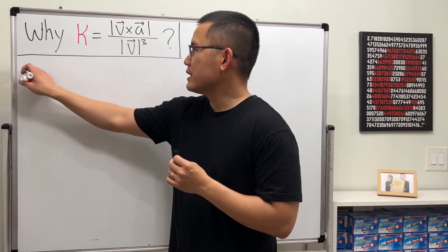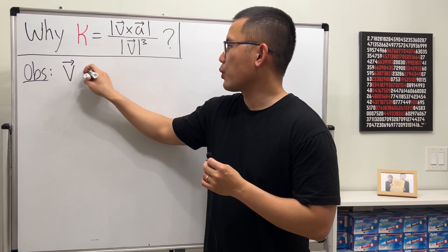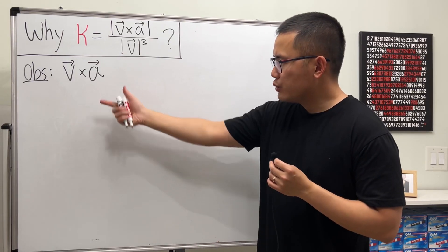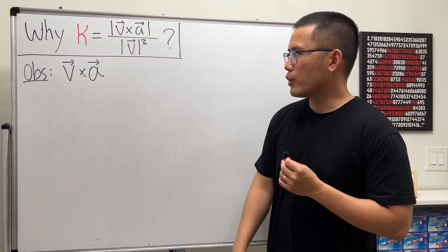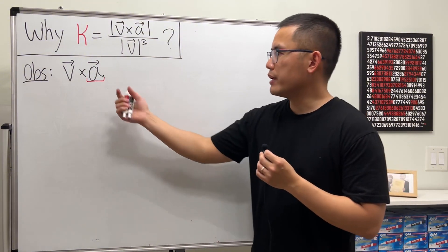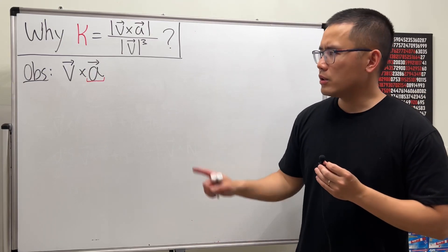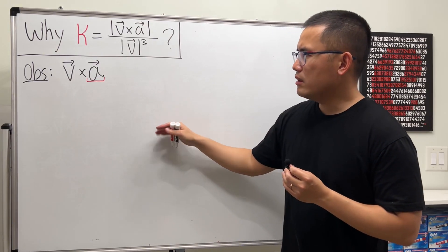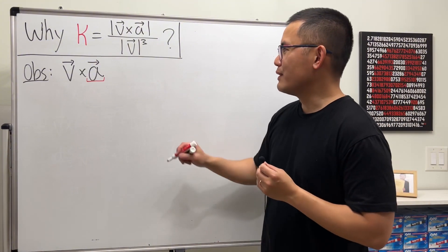Let's see why this is true. First, let's begin by making an observation from v cross a. If we just look at this, it doesn't seem like we have a lot to work with. But for a, we have done a video on how we can break down a into the tangential component and the normal component. Since we'll be working with T and N, we can also do something with v.